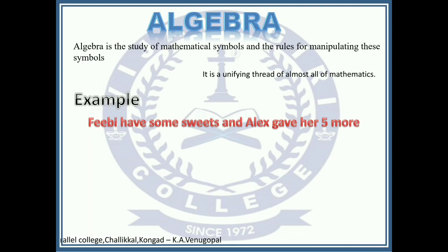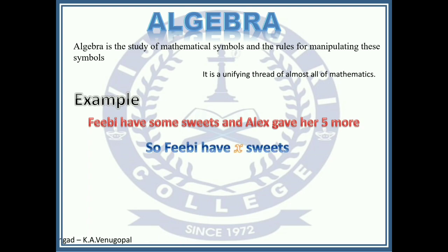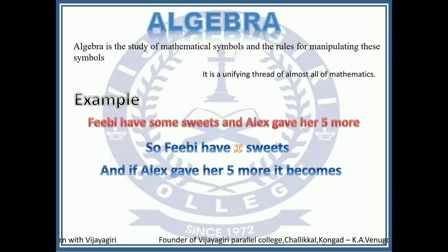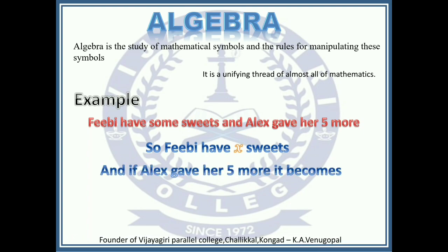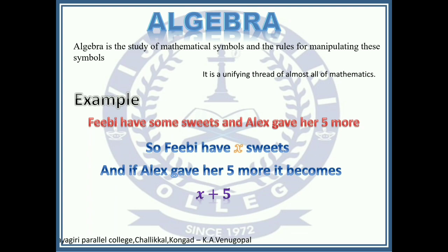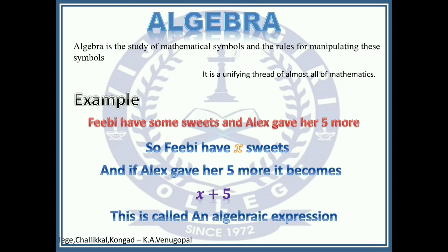Let's take x as the number of sweets that Phoebe has. So she has x sweets. And if Alex gave her 5 more, it becomes x plus 5. This is called an algebraic expression, and this is the very basic of algebra.